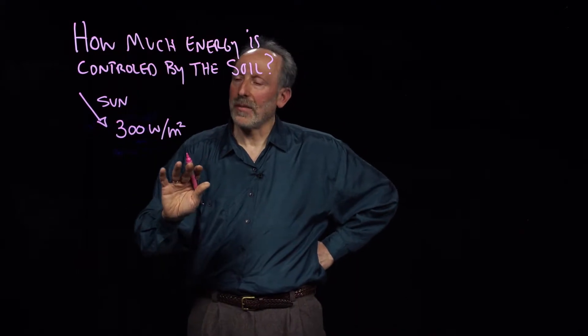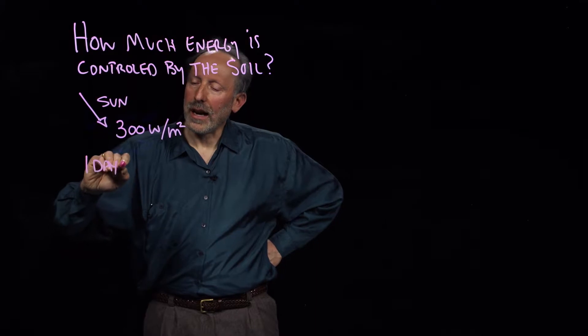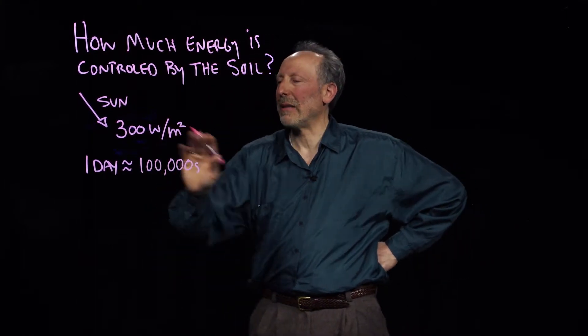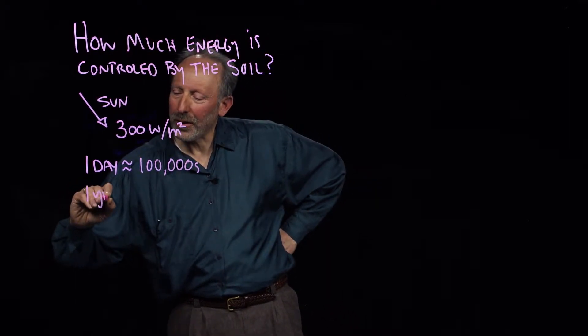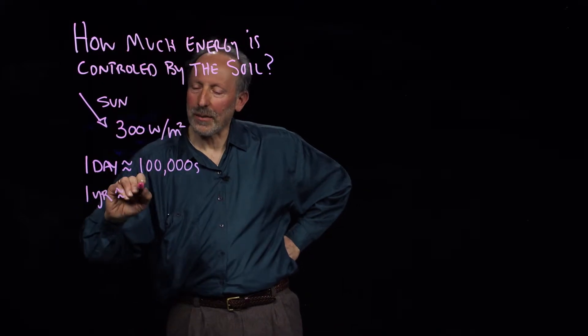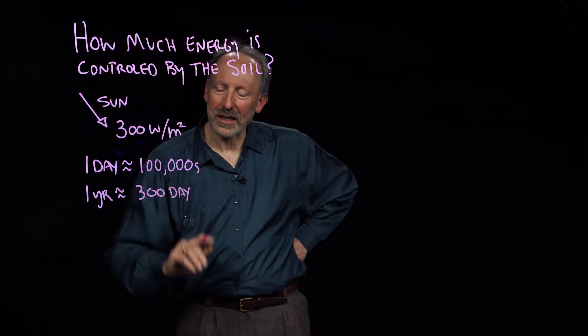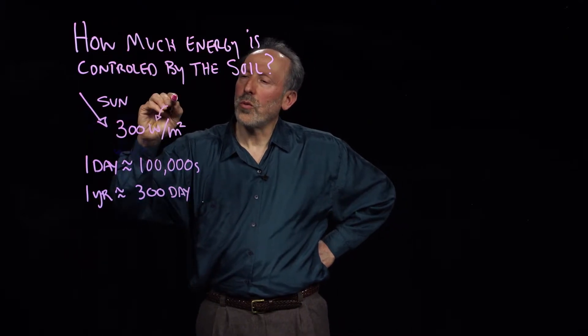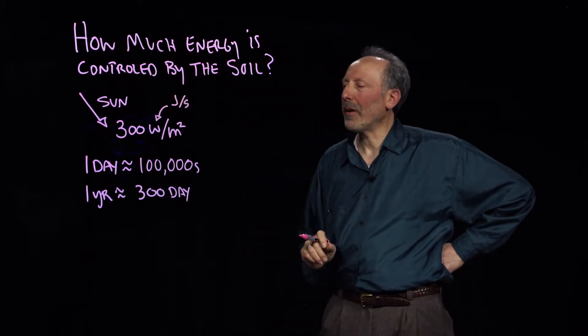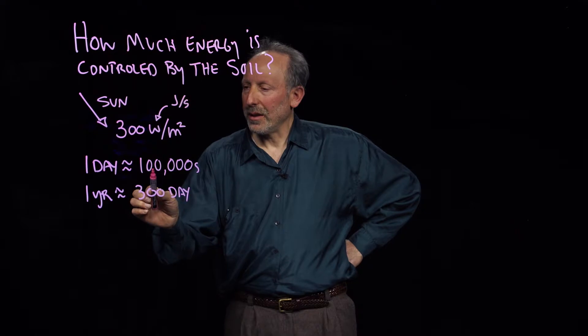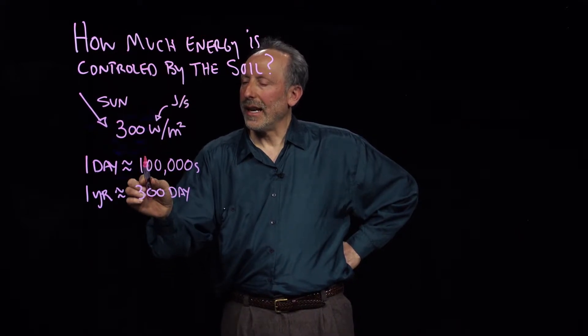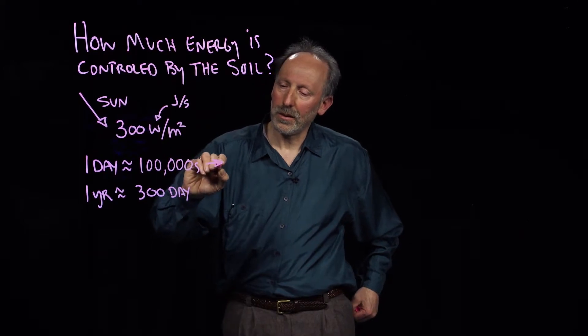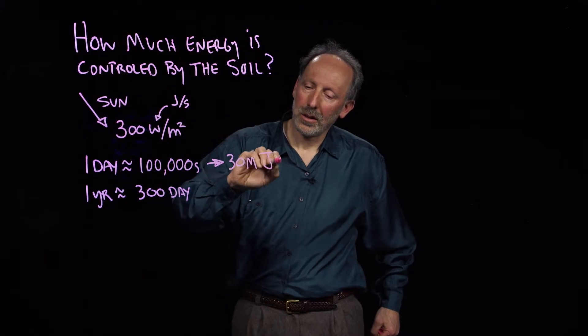So 300 watts per square meter. And now one day I'm going to say is about a hundred thousand seconds. It's a little bit of an overestimate, it's really 86,000, but we'll say it's about a hundred thousand to keep the math easy. And we'll say that one year is about equal, since this is an overestimate, I'm going to underestimate and say it's about 300 days in a year, just to keep things simple. So what we have is 300 watts and a watt is one joule per second. So we have 300 times 100,000, and the total joules per day is going to be 30 million joules per day.